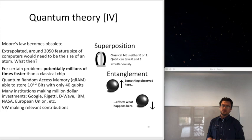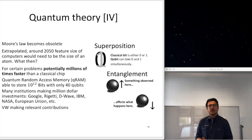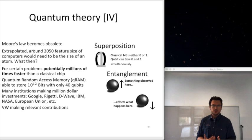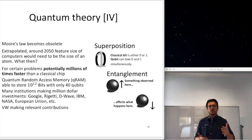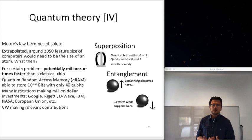Moore's law basically dictates that the feature size on silicon chips halves every two years approximately, making chips more powerful. But if we extrapolate this trend to 2050, our computers would be the size of atoms. You can engineer nuclear matter for computation, but these systems are inherently complex to handle and get very hot — it's very difficult to operate such a computer.